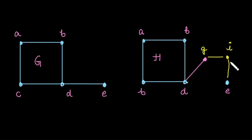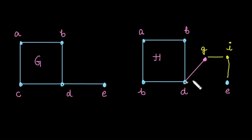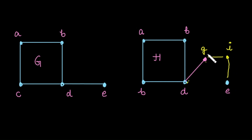In this case, graph H is obtained from graph G by using two elementary subdivisions. First, we removed edge DE and converted it into two edges: D to G and G to E. After that, we removed edge GE and added another vertex, joining it with G and E.